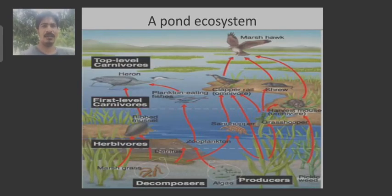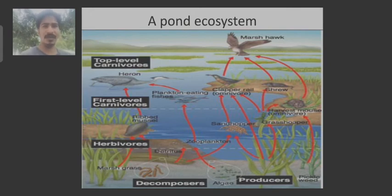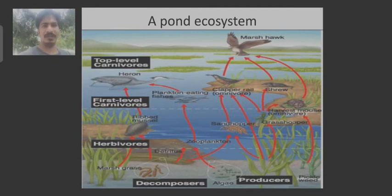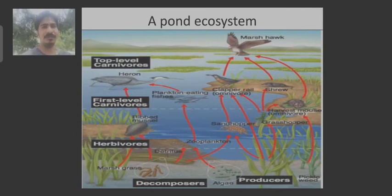This is an example of a pond ecosystem where you can see the producers — mostly plankton, algae, or rooted plants — followed by the herbivores, mostly insects, and the carnivores and top-level carnivores.